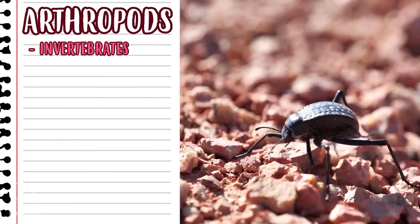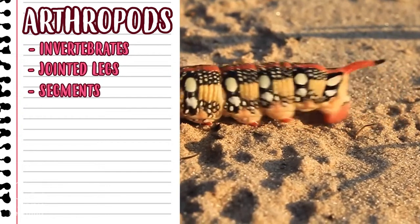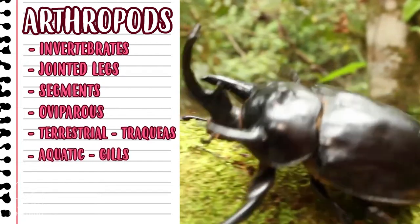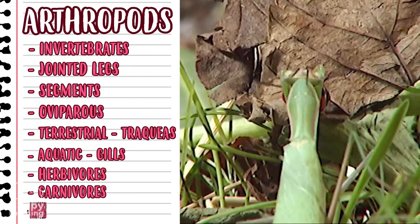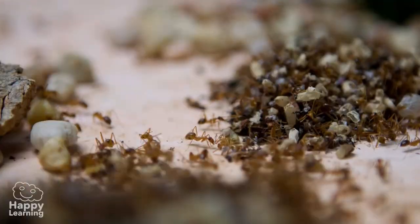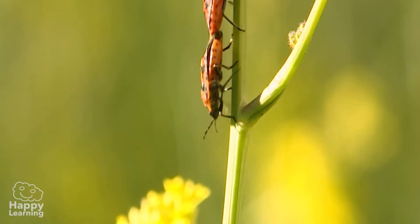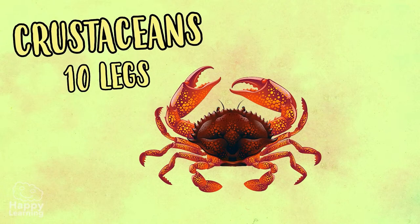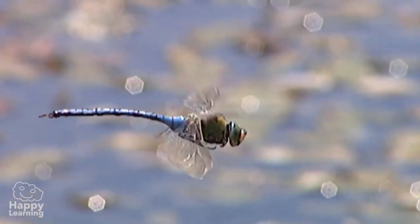Arthropods are invertebrates. Their main characteristics are jointed legs, bodies divided into segments, and they lay eggs — meaning they are oviparous. Terrestrial arthropods breathe through their tracheae and aquatic ones through their gills. They can be herbivores, carnivores, or omnivores. They are classified in four groups: insects with six legs, arachnids with eight, crustaceans with ten, and myriapods with more than ten legs and elongated bodies. That's everything about arthropods!